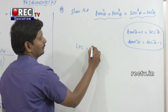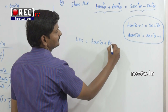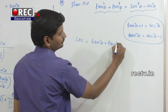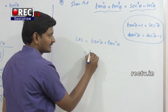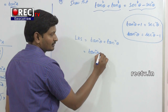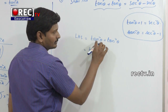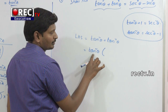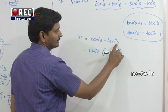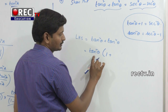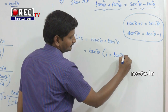LHS is equal to tan²θ + tan⁴θ. In both terms, tan²θ is the common factor, so we take tan²θ outside. That gives tan²θ times (1 + tan²θ).